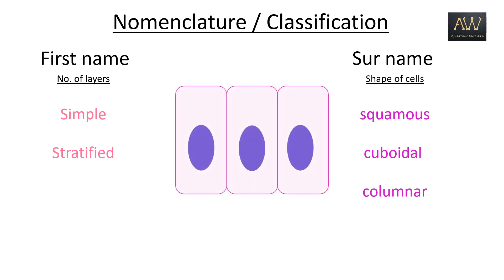More often than not, the cell membranes are usually not well appreciated, and thus it is the appearance of the nuclei which help us to identify not just the shape of the constituent cells but also the number of cell layers present in a particular tissue.